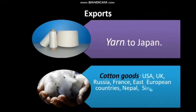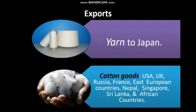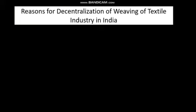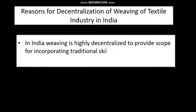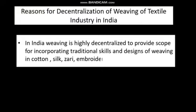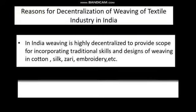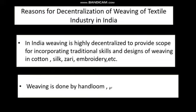In India, weaving is highly decentralized to provide scope for incorporating traditional skills and designs of weaving in cotton, silk, zari, embroidery, etc. Weaving is done by hand loom, power loom and in mills. Now let us discuss the major challenges faced by the cotton textile industry in India.